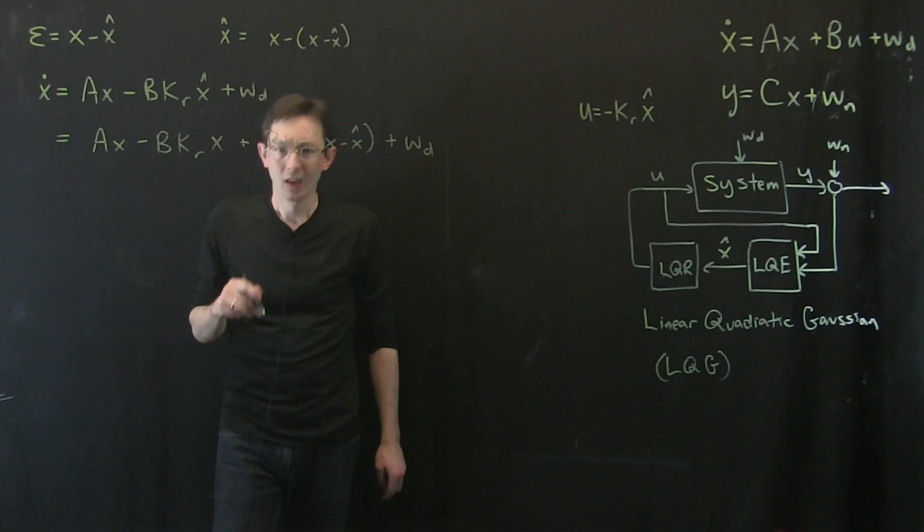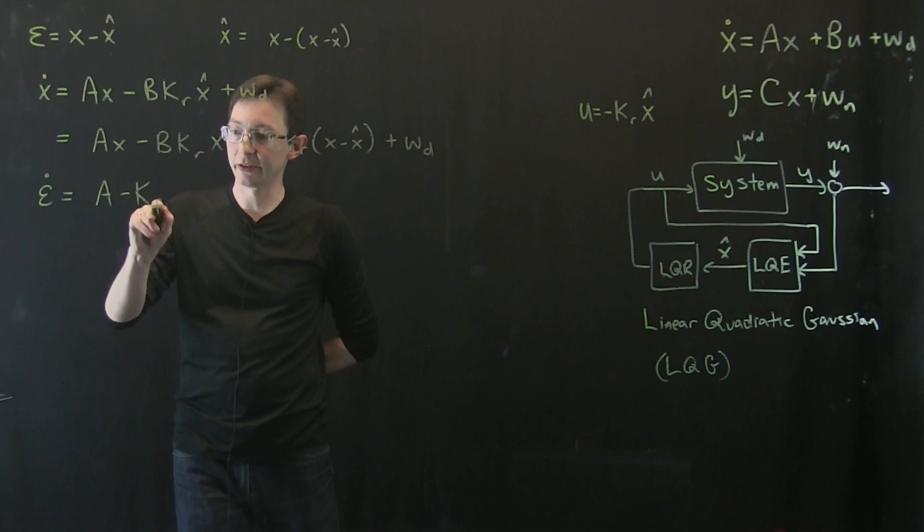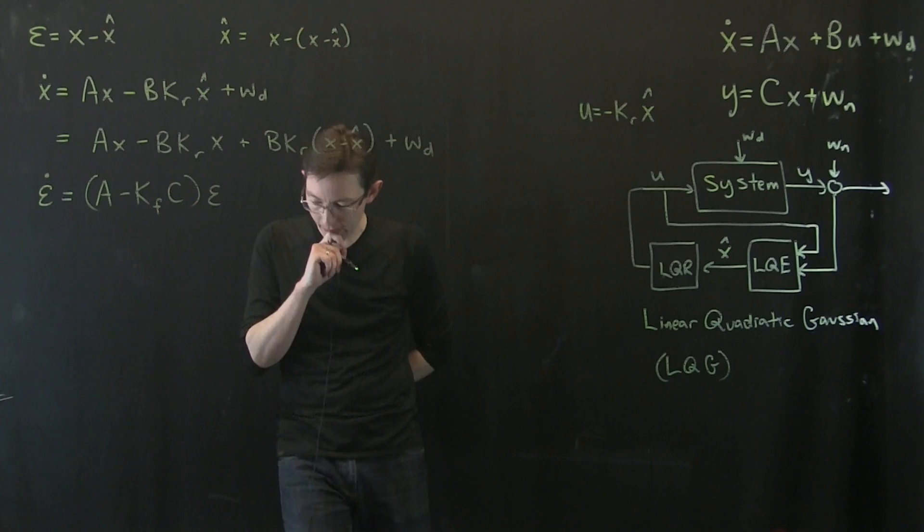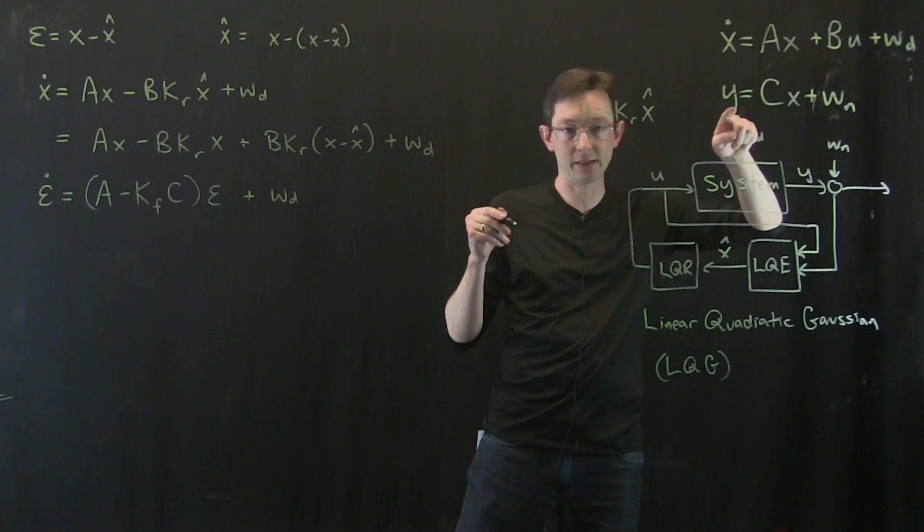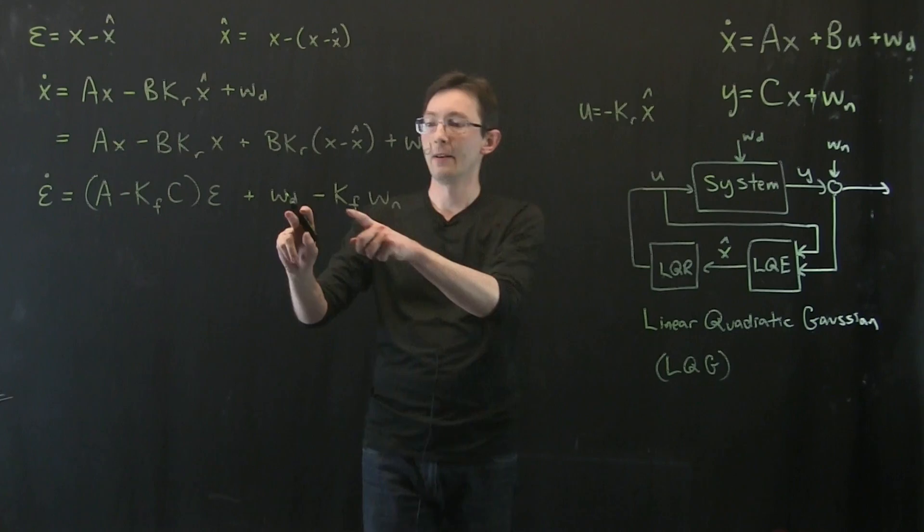Okay? And if you recall the dynamics of our epsilon, if I looked at epsilon dot, I'm pretty sure I got something like a minus my Kalman filter gains times c epsilon. And I didn't actually derive this for the case with disturbance and noise, but if you do, what you get is a plus wd. So this wd essentially feeds through. And then I also get a minus kf times my sensor noise. So you can just verify, do this on some pencil and paper and verify that you get these terms, but it's pretty simple.